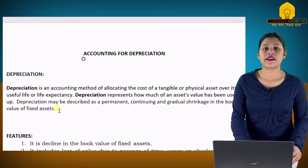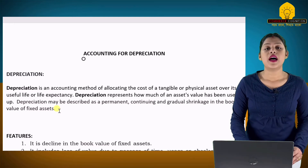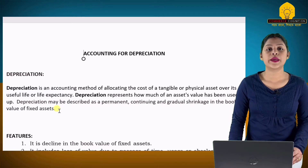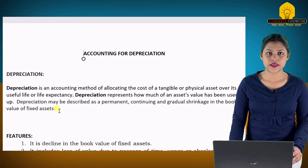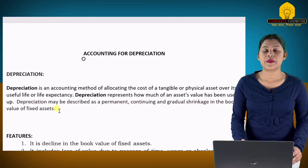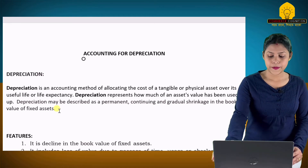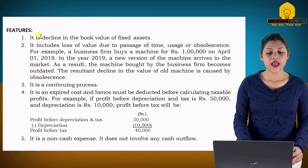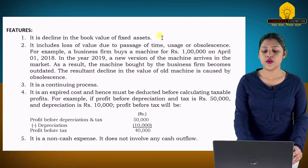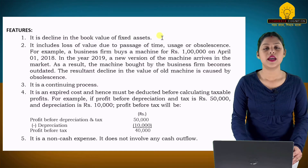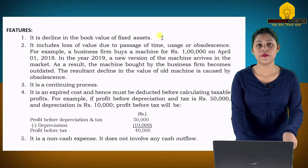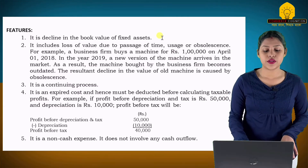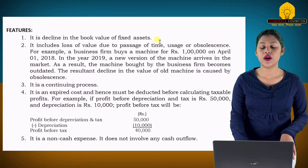Depreciation refers to a reduction in the book value of an asset. The number of assets you have had — the book value is reduced — and that reduction is the depreciation. Depreciation is a continuous process. The first characteristic is: it is a decline in the book value of a fixed asset. What is the definition of depreciation? It is a decline in the book value of a fixed asset.